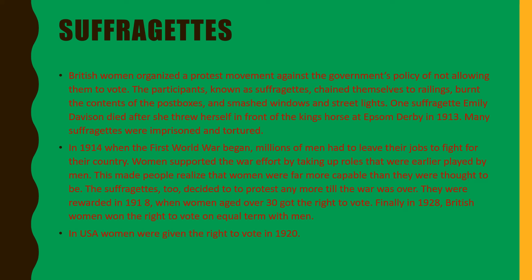Many suffragettes were imprisoned and tortured. In 1914, when the First World War began, millions of men had to leave their jobs to fight for their country. Women supported the war effort by taking up roles that were earlier played by men. This made people realize that women were far more capable than they were thought to be. The suffragettes decided not to protest until the war was over, and they were rewarded in 1918 when women aged over 30 got the right to vote. Finally, in 1928, British women won the right to vote on equal terms with men.